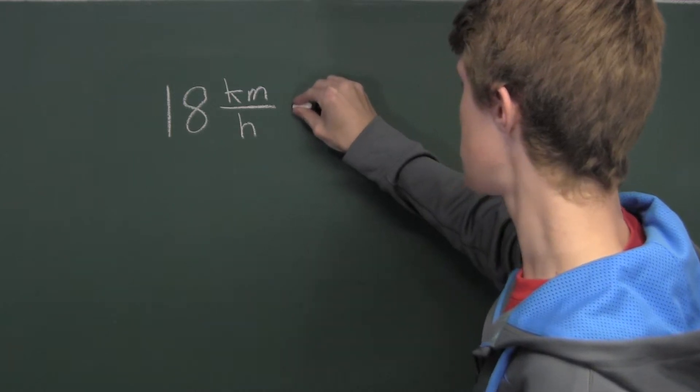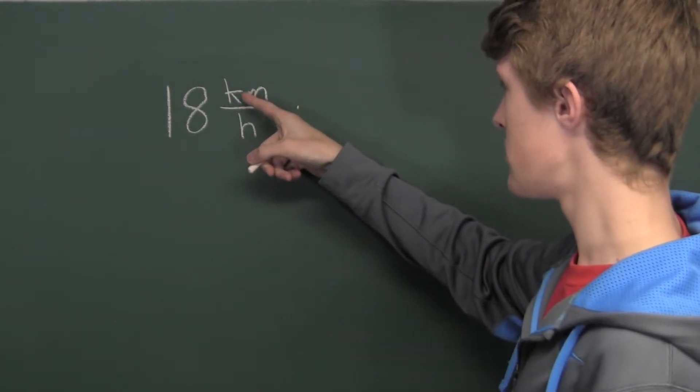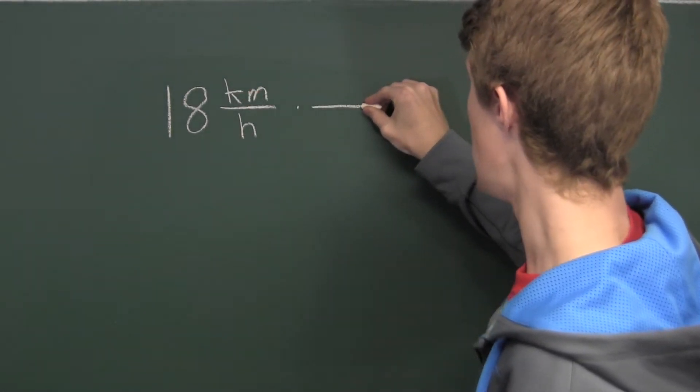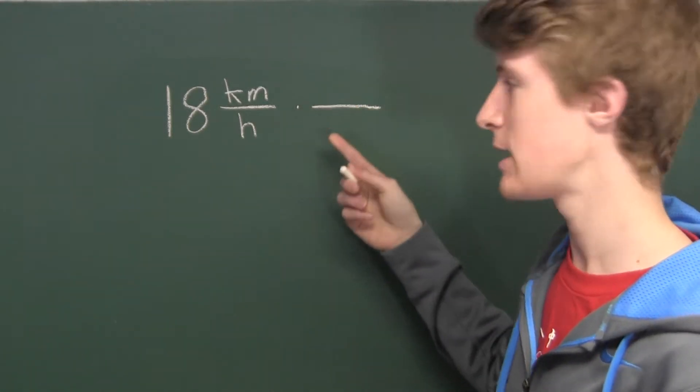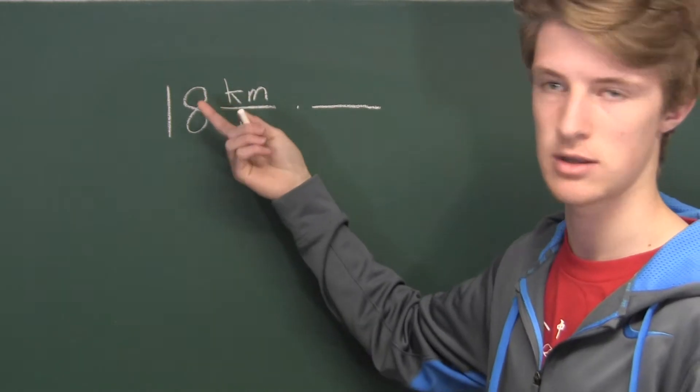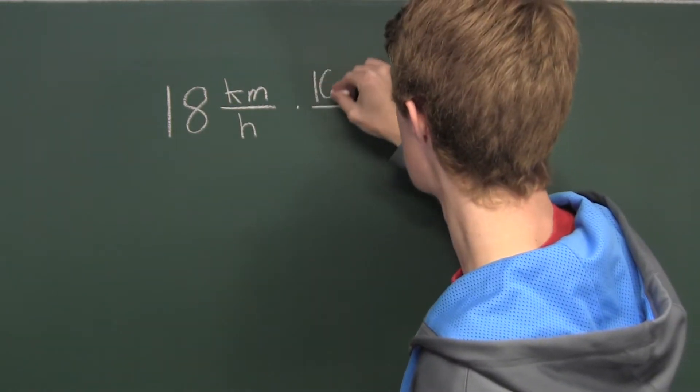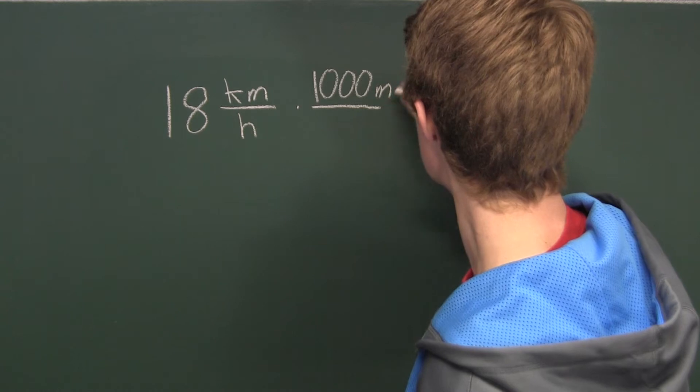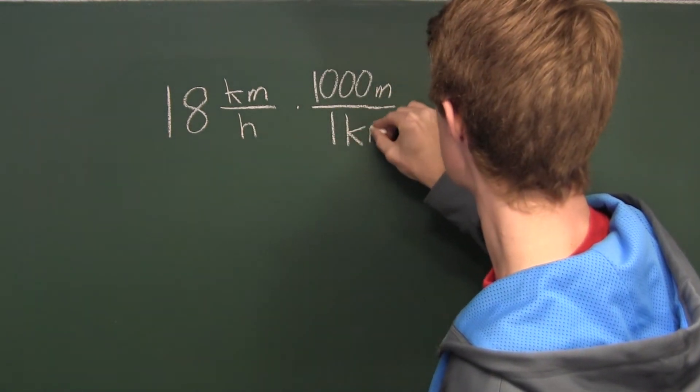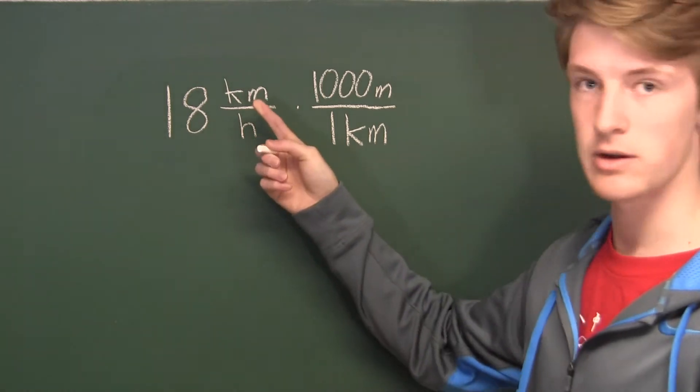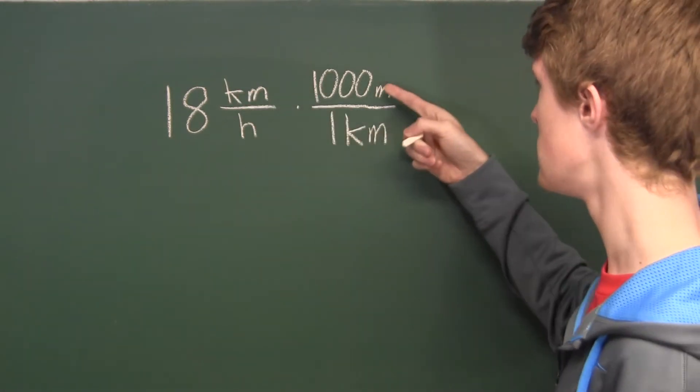Now we are able to multiply by putting the kilometers in the denominator and then putting 1,000 meters over 1 kilometer because that fraction is equal to 1 and won't change this value. So now we have converted kilometers into meters.